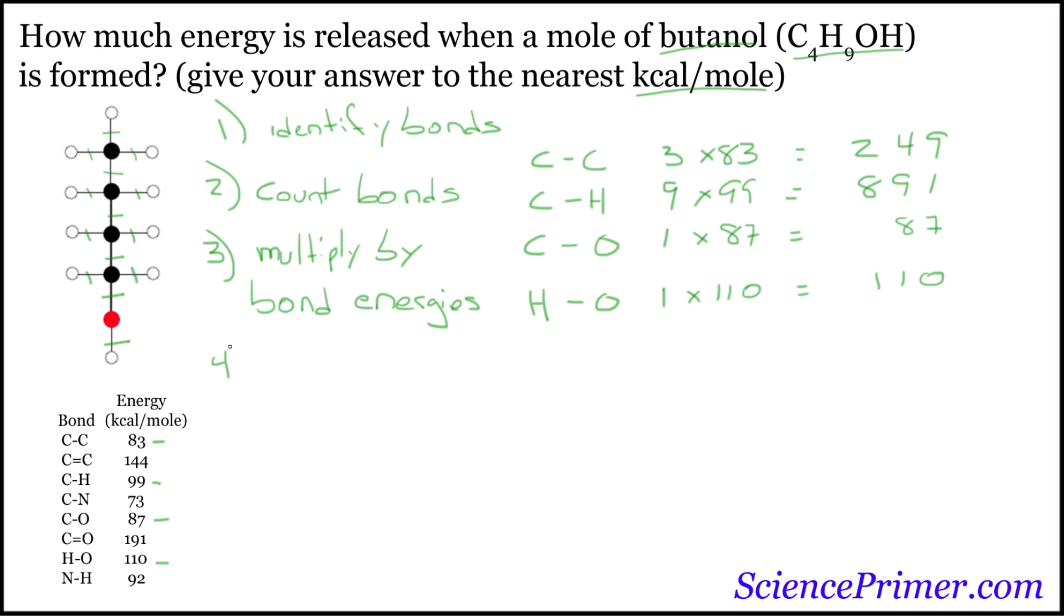The fourth and final step is to sum these energies. So 9 plus 1 is 10, plus 7 is 17.